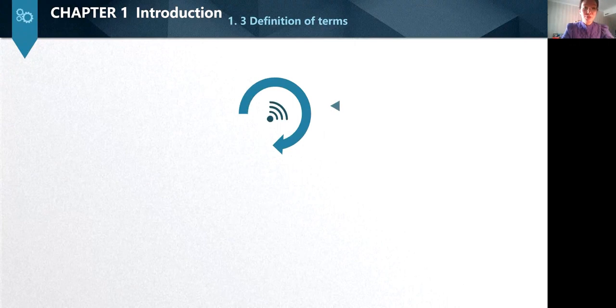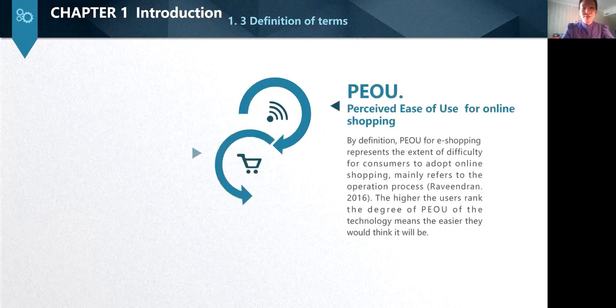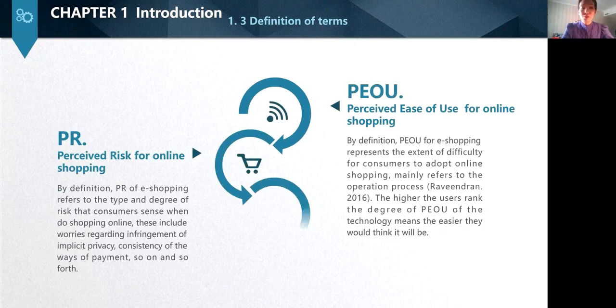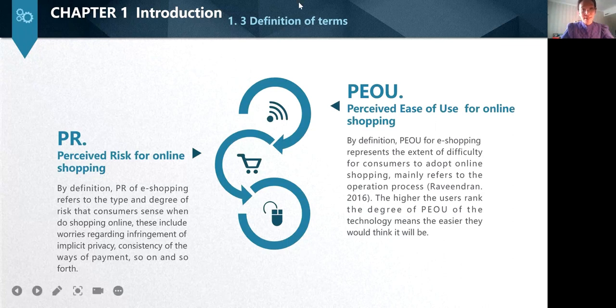This slide demonstrates the definition of perceived risk and perceived ease of use for online shopping. They separately refer to the degree of risk and different difficulty level involved in online shopping. Let's move on to the next chapter.